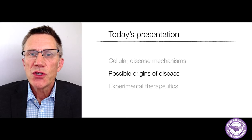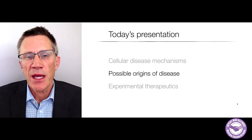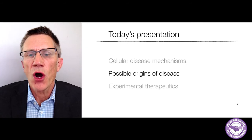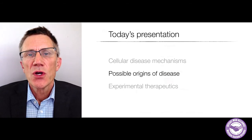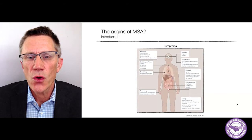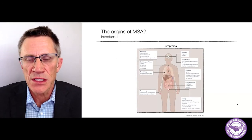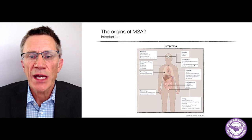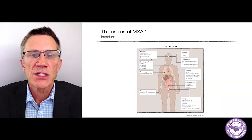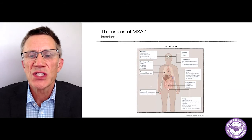We know something about what's going on in MSA, but why does it start? What's the origin of the disease? There is a whole plethora of different symptoms in the disease, ranging from psychiatric, sleep, heart — things that occur obviously with movement — but even skin, gut symptoms.